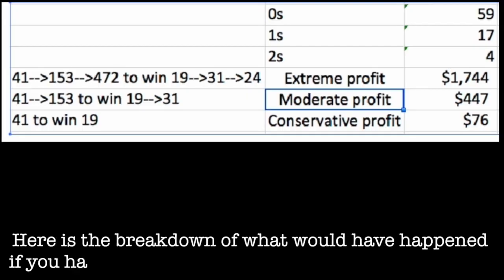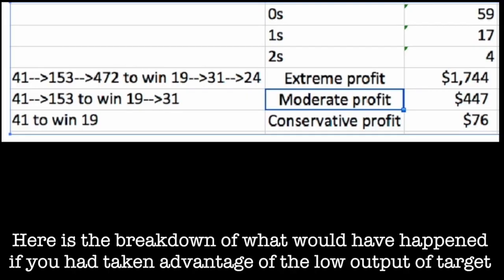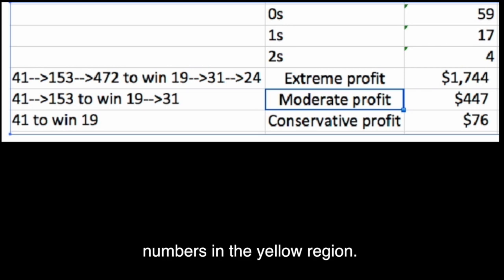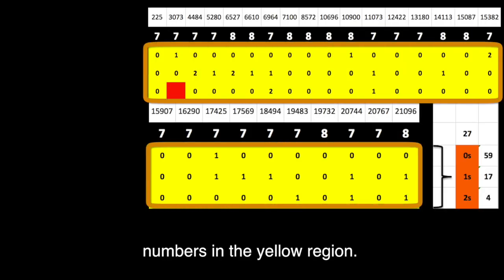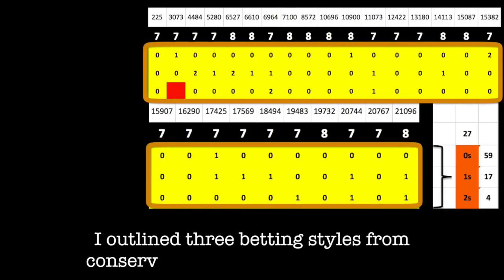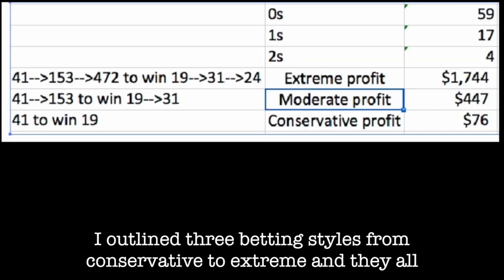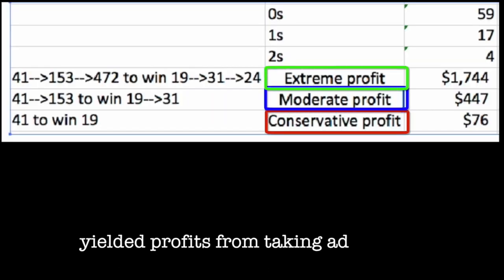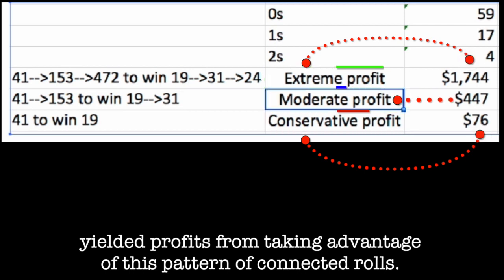Here's a breakdown of what would have happened if you had taken advantage of the low output of target numbers in the yellow region. I outlined three betting styles from conservative to extreme, and they all yielded profits from taking advantage of this pattern of connected rolls.